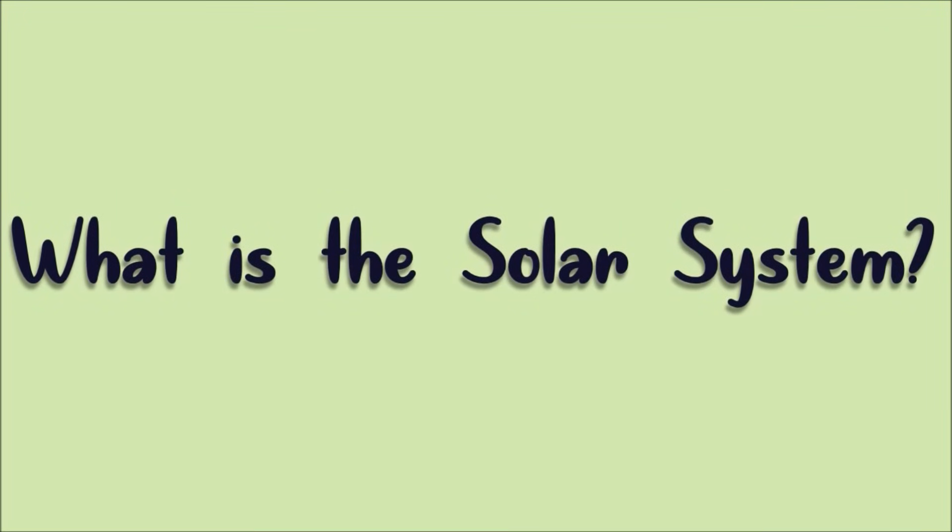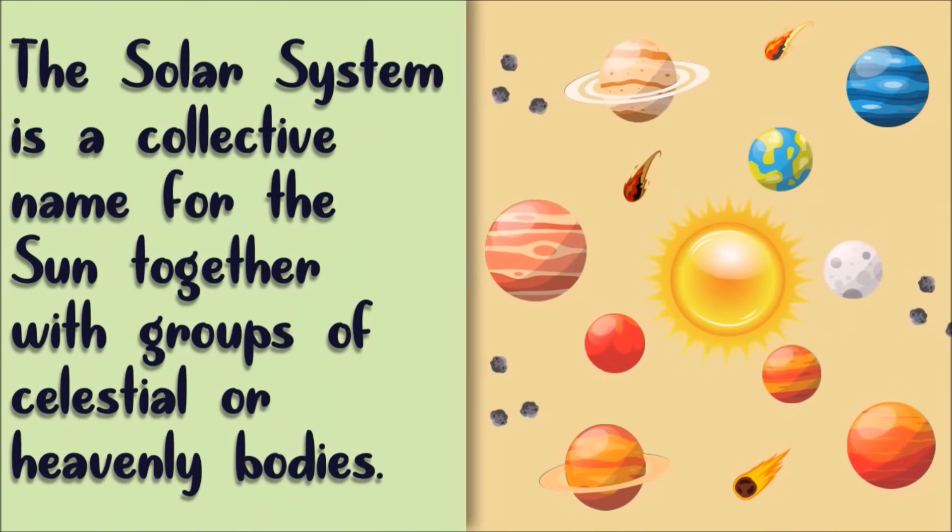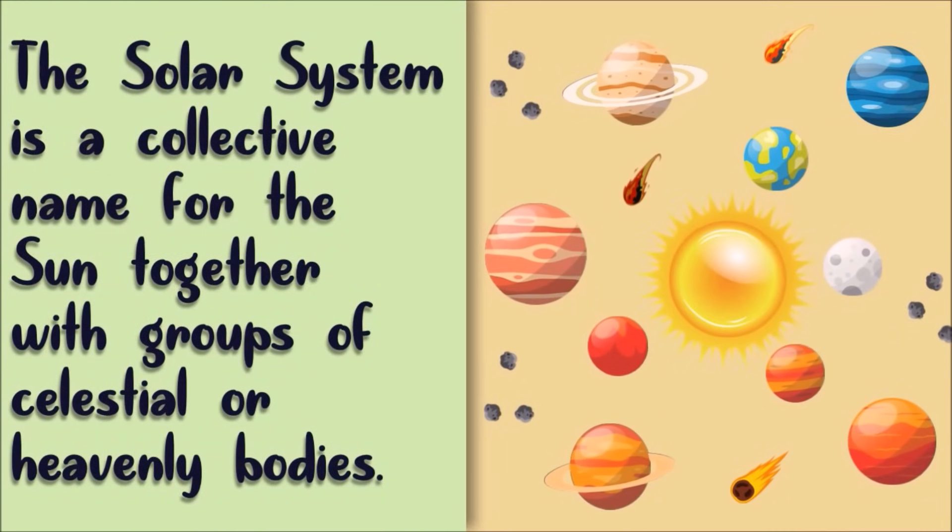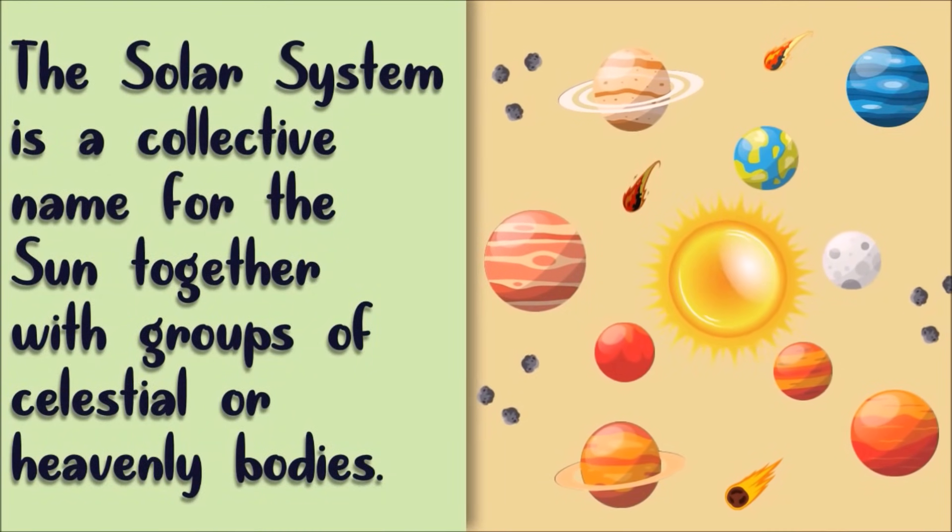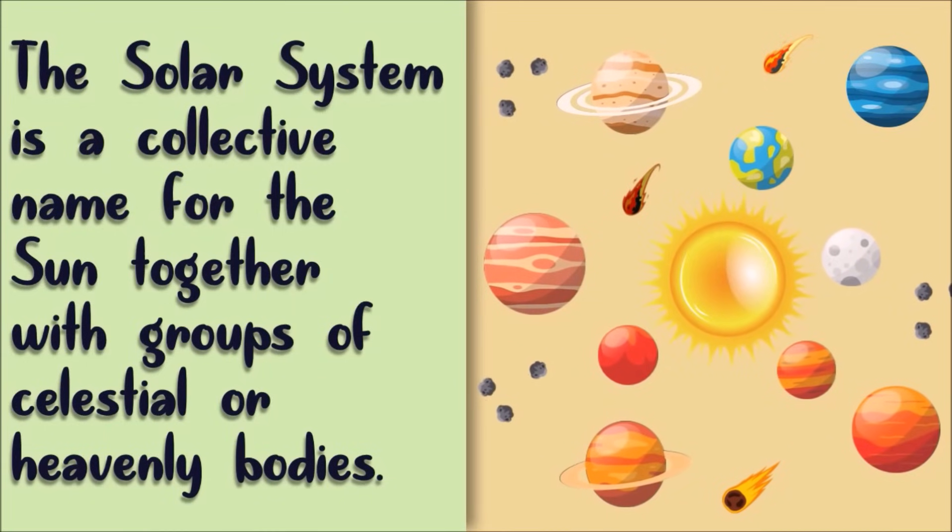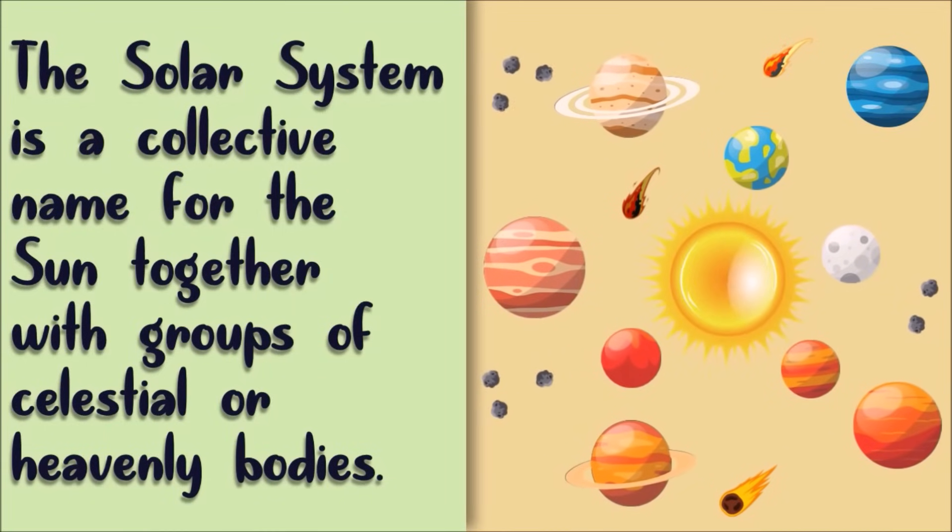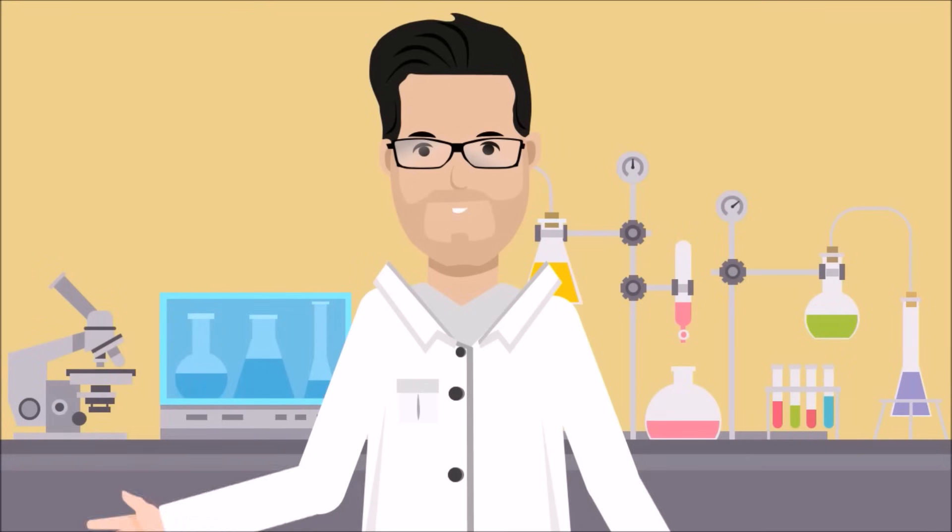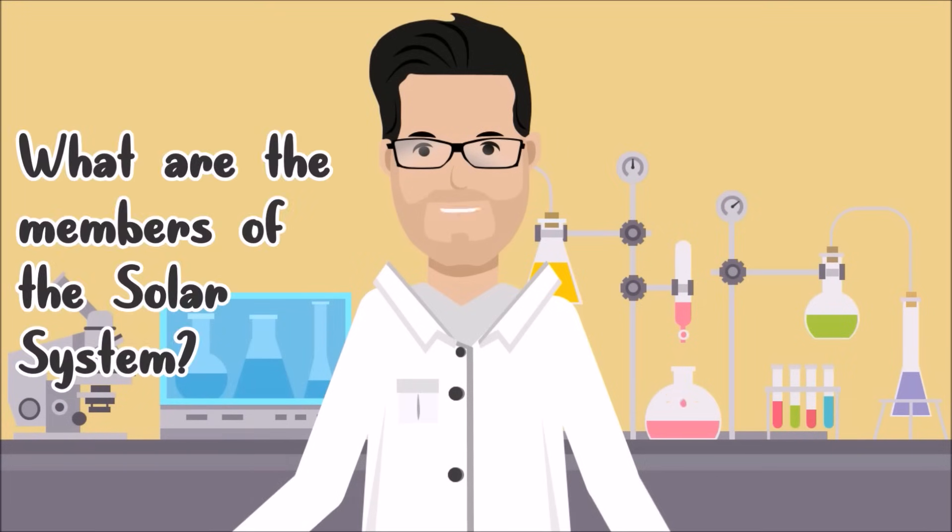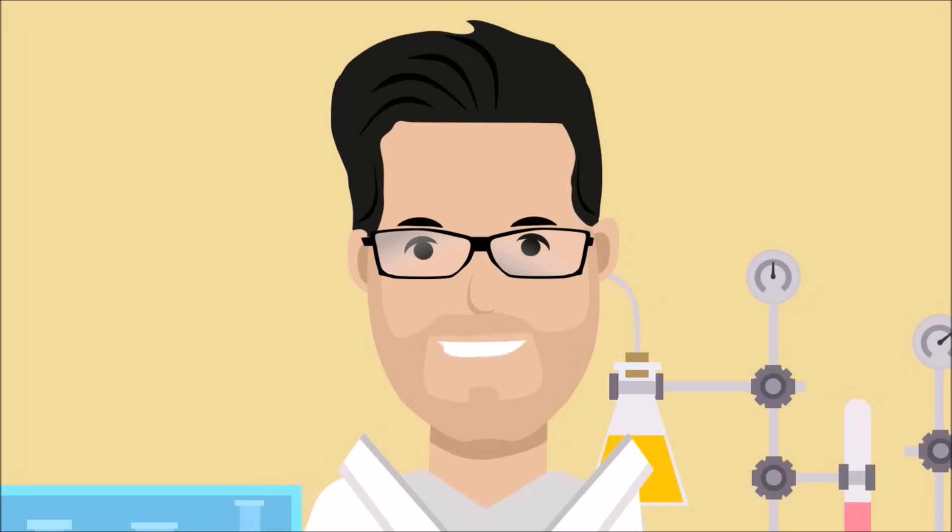What is the solar system? The solar system is a collective name for the sun, together with the groups of celestial heavenly bodies that are held in its gravity and revolve around the sun. Can you tell me what are the members of the solar system? Let's identify it one by one.